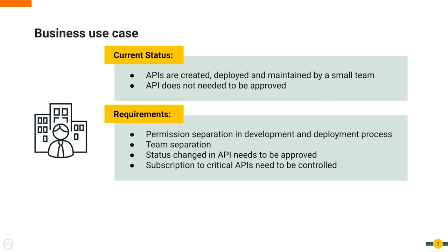Access to certain resources needs to be controlled and limited. API developers create, version, and test APIs, while permission to deploy needs to be provided to a senior team member, team lead, or API product managers.